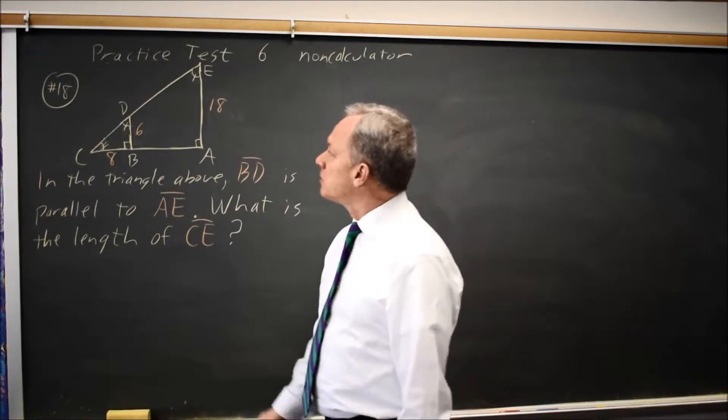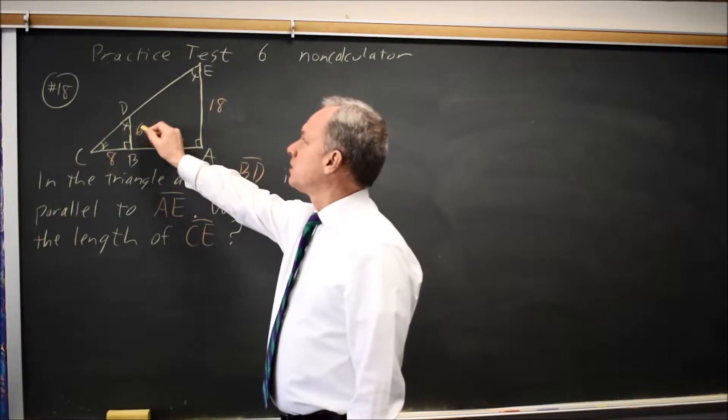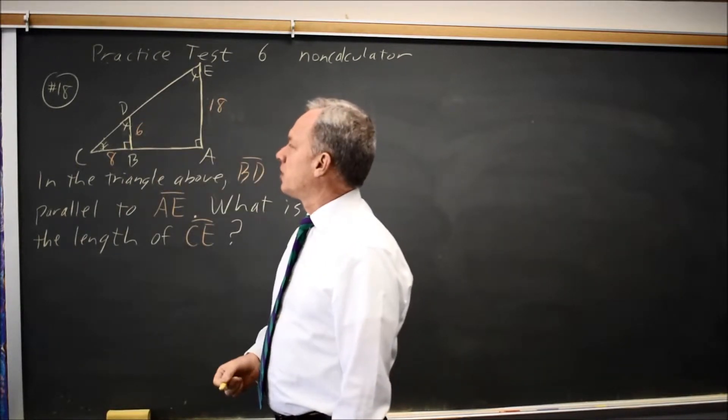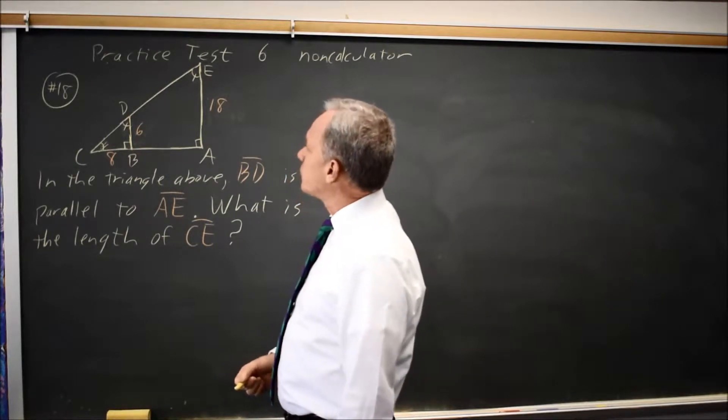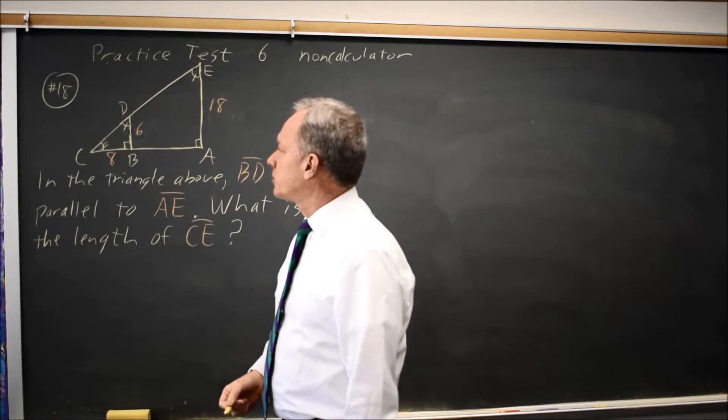Since they're similar triangles, the short legs are proportionate. In the large triangle, the short leg is three times the short leg of the small triangle. They're asking for CE, which is the hypotenuse, since these are right triangles.